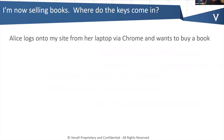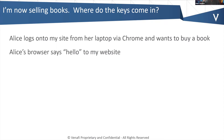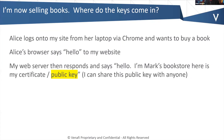Now I'm selling books — where do these keys come in? I've got a customer, her name is Alice, and she logs into my website from her laptop using the Chrome browser and she wants to buy a book. Alice's browser, when she logs into my site, says hello, I want to buy a book. My web server responds back and says hello, I'm Mark's bookstore. The way it says that is by giving her my certificate and also the public key contained in the certificate. Note that I can share this public key with anyone — it's public, it's meant to go out, anyone can download it.